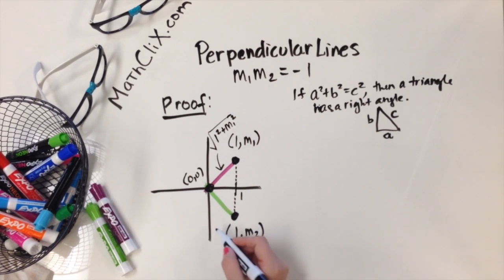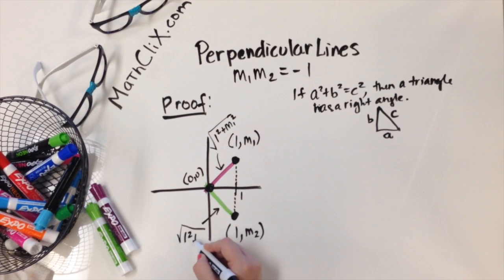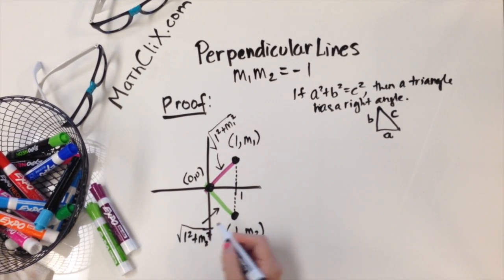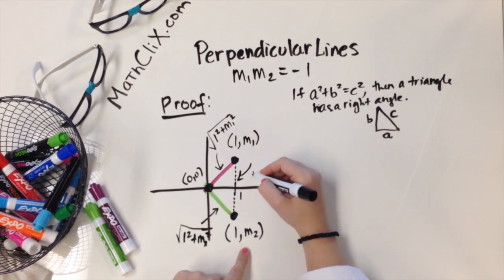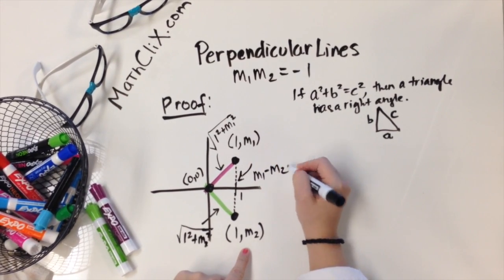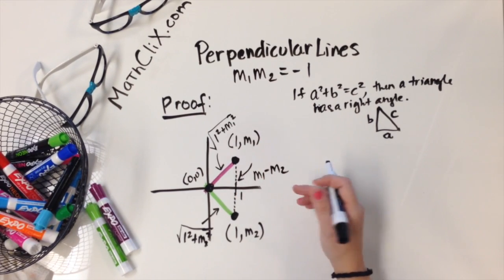And then down here you would have the same thing, only you would have m2. And then this length here would just be m1 - m2, or you could call it m2 - m1 because you're going to square it. It doesn't matter either way.